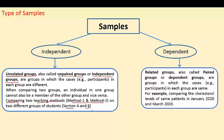In the case of dependent samples, they are related groups. For example, if you want to compare the cholesterol level of the same patients over two different time periods, you will get two different values — a pair of values for the same patient. This is a dependent sample. We will have to deal with independent and dependent samples differently.